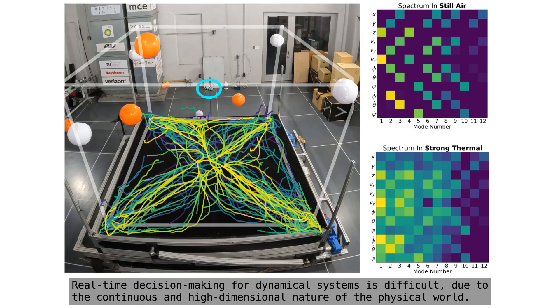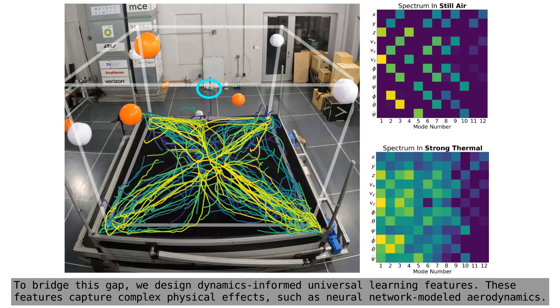Real-time decision-making for dynamical systems is difficult due to the continuous and high-dimensional nature of the physical world. To bridge this gap, we design dynamics-informed universal learning features. These features capture complex physical effects such as neural network-modeled aerodynamics.